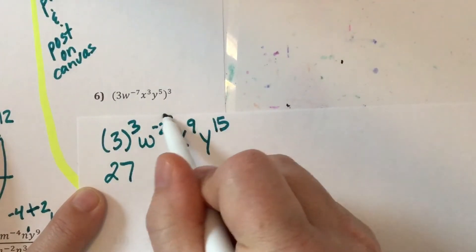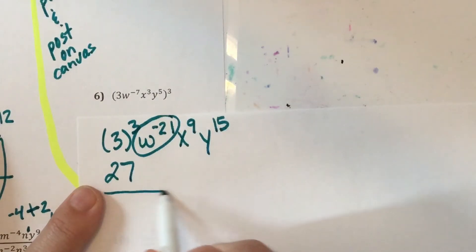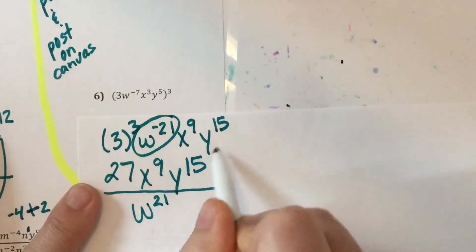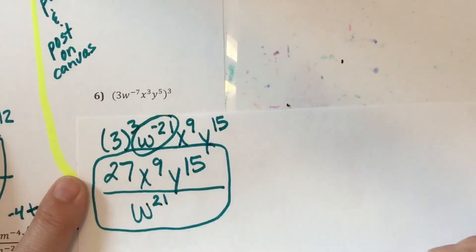And then Mr. W you got to move. So the W is going to drop to the denominator. The exponent will switch to a positive 21. The X stays put and the Y stays put. And that's our answer and we're done.